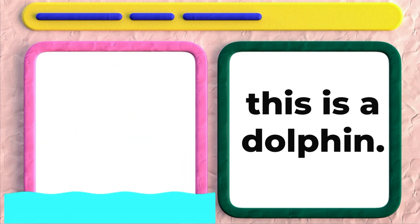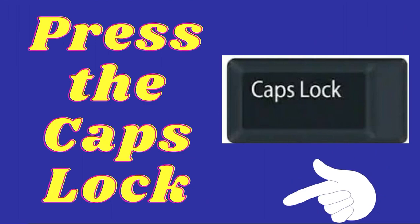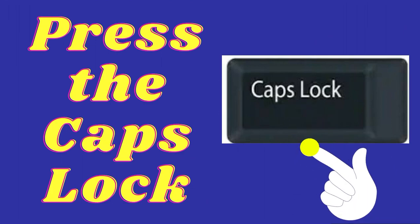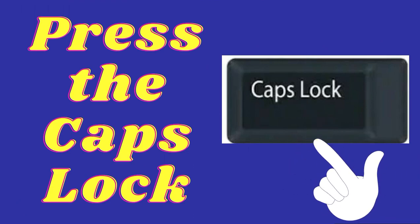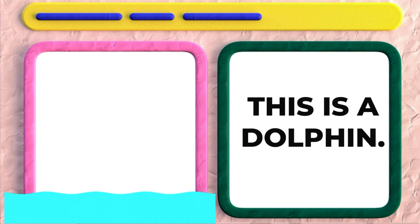I have written 'this is a dolphin' and this sentence is written in small letters. Now if we want to write it in capital letters, then we have to press the caps lock key. When I press the caps lock key and write the sentence again, the sentence is now in capital letters: THIS IS A DOLPHIN.